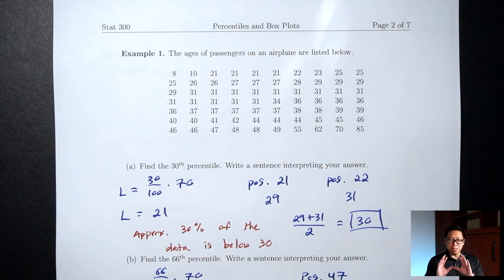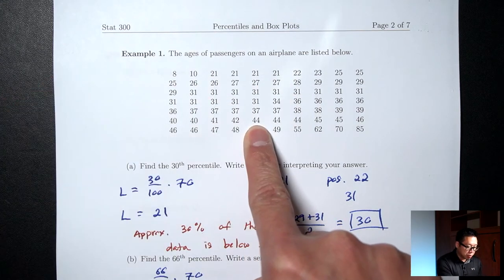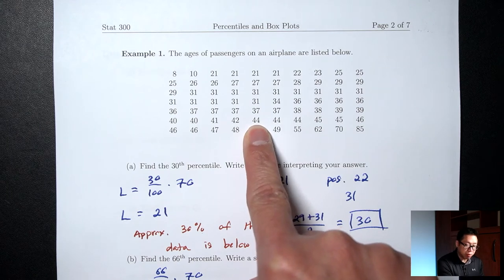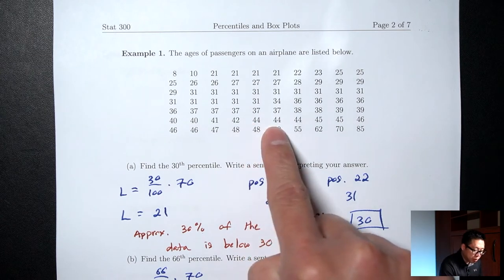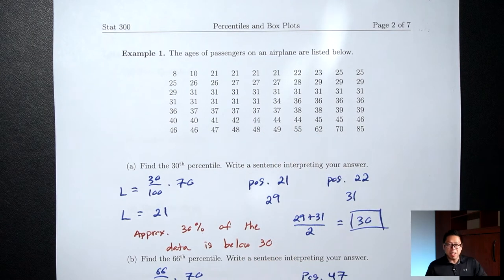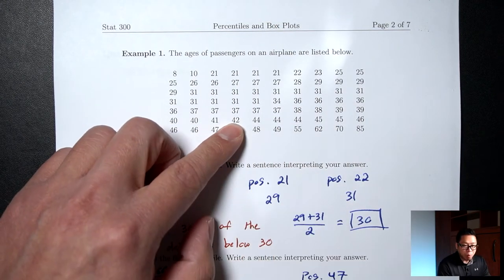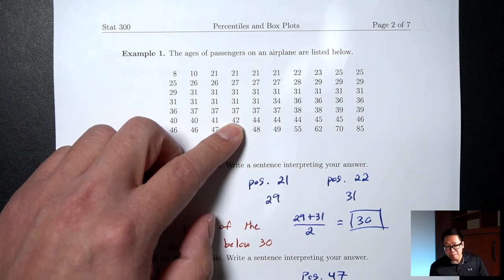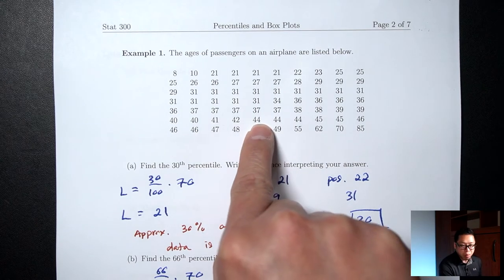The interpretation: approximately 77% of the data is below 44. A disclaimer: we counted values strictly less than 44. Other textbooks may include the 44 or count it as a half — there are multiple methods. For this class, don't include the data value itself when counting.